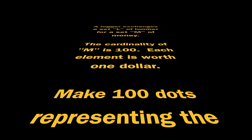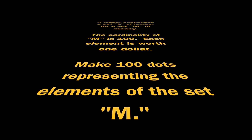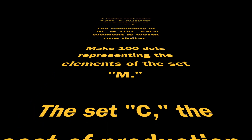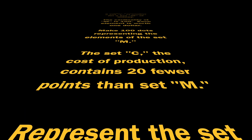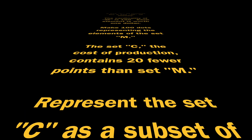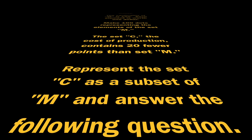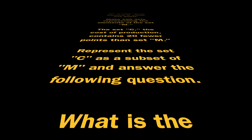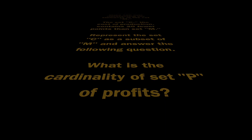Make 100 dots representing the elements of the set M. The set C, the cost of production, contains 20 fewer points than set M. Represent the set C as a subset of M and answer the following question: What is the cardinality of set P of profits?